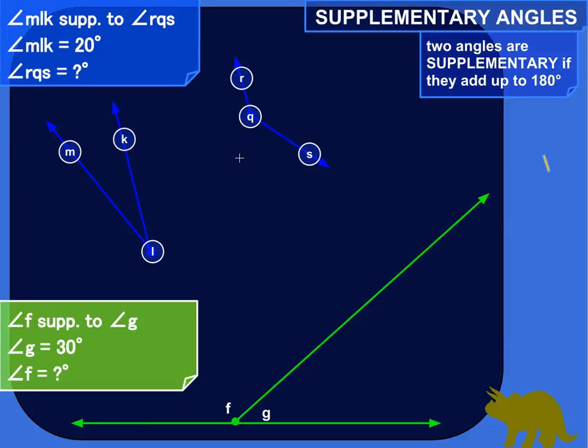Hi, so supplementary angles. I've got a couple problems here where I use different formats of naming angles and just want to get used to the two different ways of naming those. And then we're going to explore the concept of two angles being supplementary and using that relationship to figure out missing information. So here we go.